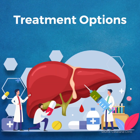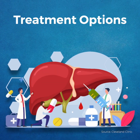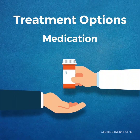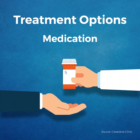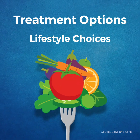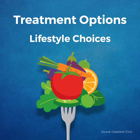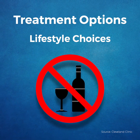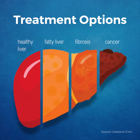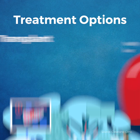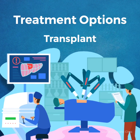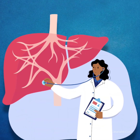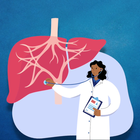Treatment for liver disease depends on the type and its progression. Treatments include medications for viral infections or inherited conditions, lifestyle changes including a healthy diet and avoiding or abstaining from alcohol, and when liver disease progresses to liver failure, a transplant may be the best option. If you're experiencing any signs or symptoms, consult your doctor.